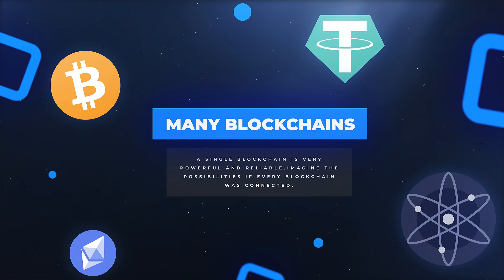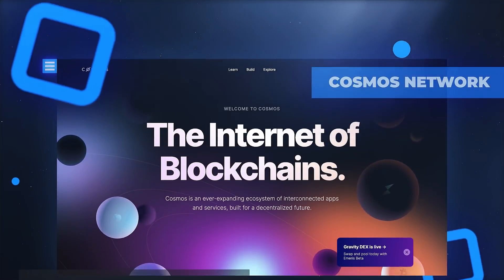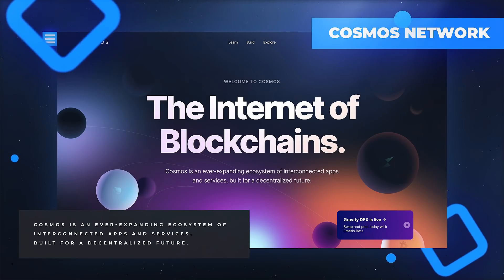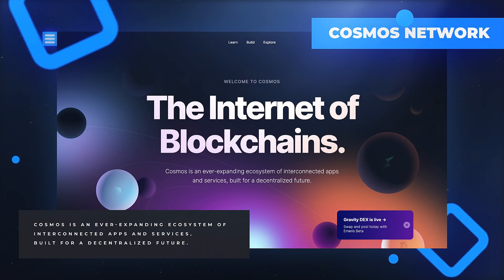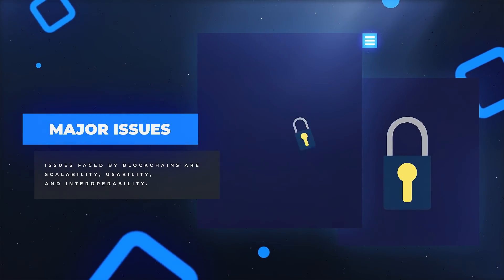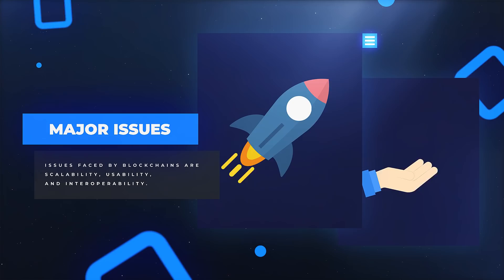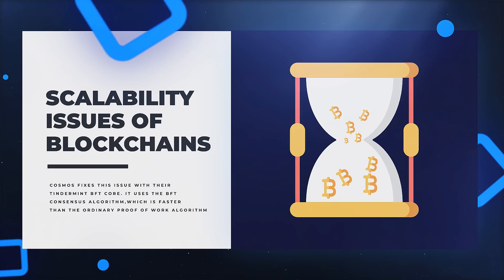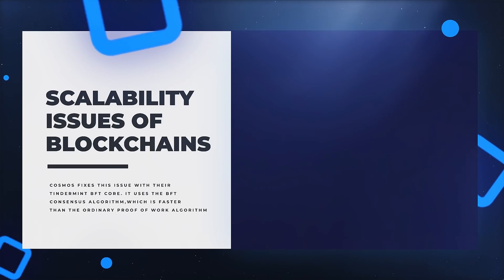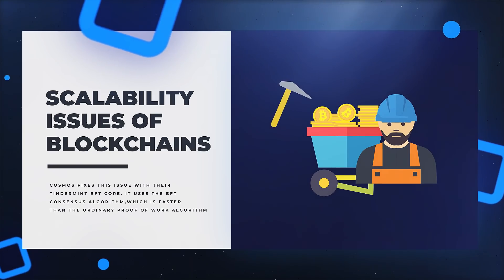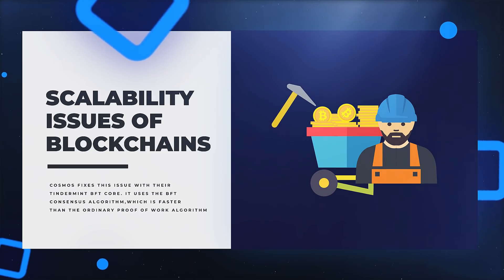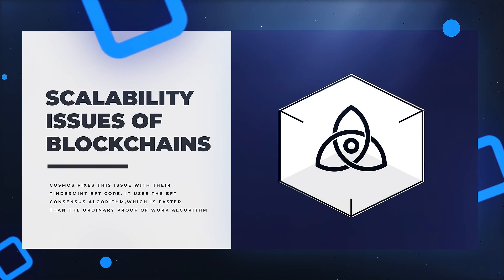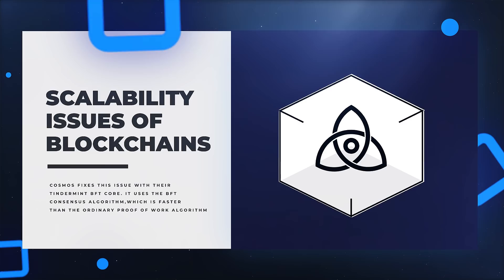There are many blockchains, and a single blockchain is very powerful and reliable. Imagine the possibilities if every blockchain was connected — a project is doing it right now: it's Cosmos Network, the internet of blockchains. There are some major issues with interconnecting blockchains: scalability, usability, and interoperability. Existing blockchains are slow to process transactions due to scalability issues, because these blockchains are designed to process transactions in a complex manner using proof-of-work algorithms. Cosmos Network fixes this issue with their Tendermint BFT core.